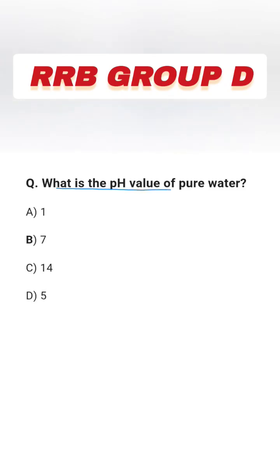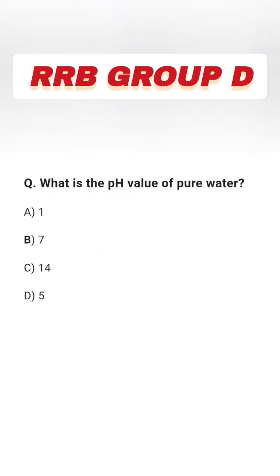Next question: What is the pH value of pure water? Options: 1, 7, 14, and 5. The right answer is option B, 7.